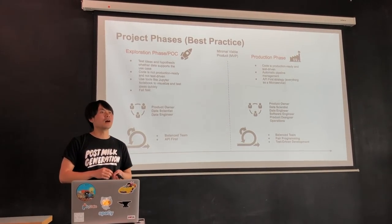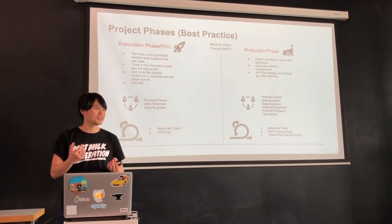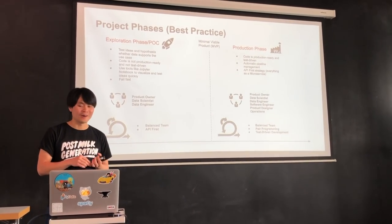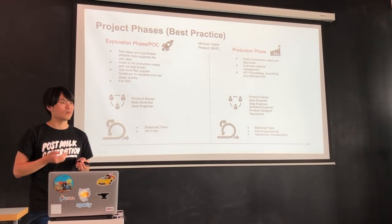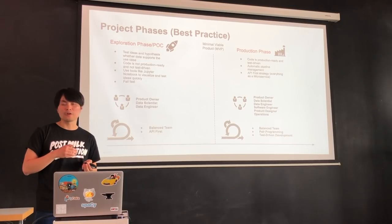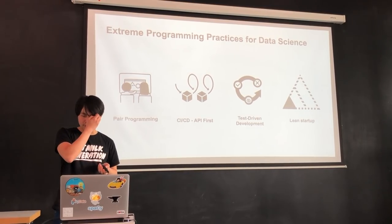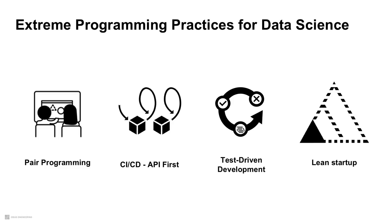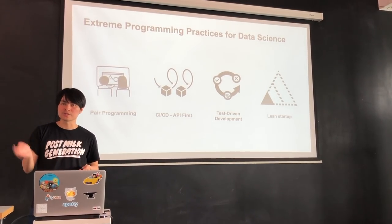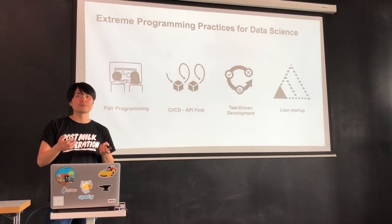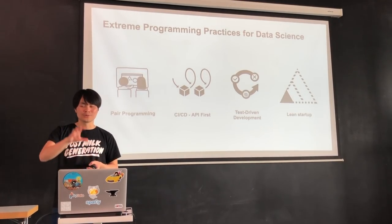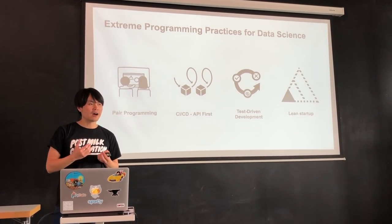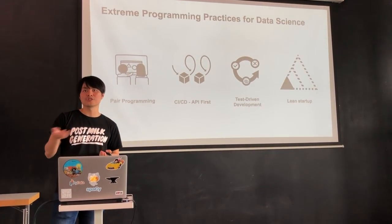When we have something that works, we also take it to production. For example, idealo has a lot of legacy systems — it's incredible how much legacy still exists — but even in that environment, my team managed to take things into production. Not everything, but some things, through a lot of hard work and following certain practices. For software engineering, I'm a big fan of extreme programming — things like pair programming, CI/CD, API-first, lean startup thinking, test-driven development. These are things people usually associate only with software engineering, but they're also very important for data science.